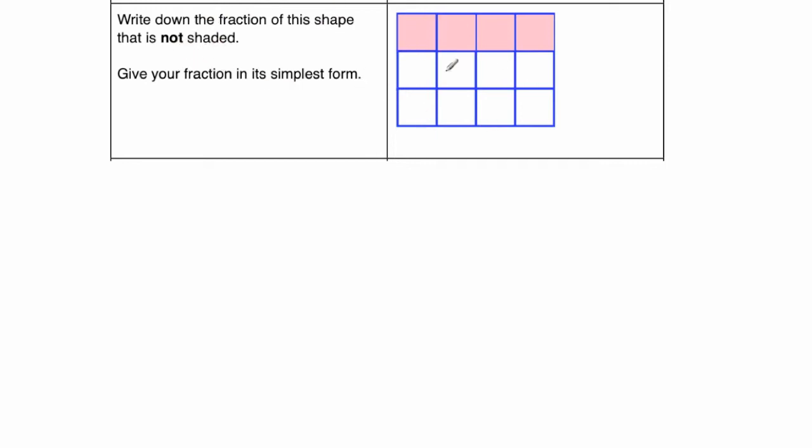Now, there's two ways to do this. One way is, I can see it says, what fraction shape is not shaded? So I can see there's 1, 2, 3 rows, and 2 of them aren't shaded. So the answer would be 2 thirds. That would be how I would do the question.